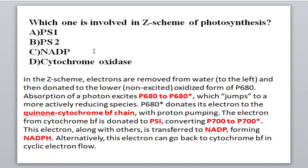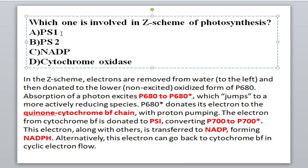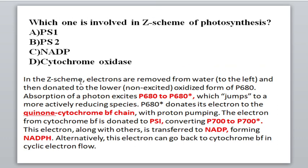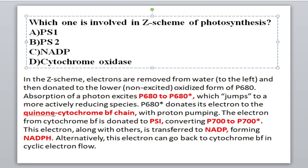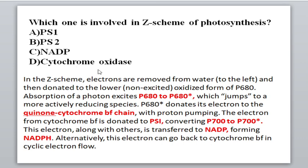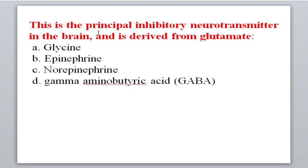Next, which of the following is involved in the Z-scheme of photosynthesis? Photosystem 1 (PS1), PS2, and NADP are involved, but cytochrome oxidase is not. In the Z-scheme, electrons are removed from water and donated to P680; absorption of a photon excites P680 to P680*, which donates electrons to quinone and the cytochrome b6f chain — not cytochrome oxidase. With proton pumping, electrons are transported to PS1, converting P700 to P700* excited state, and then electrons are transported to form NADPH.